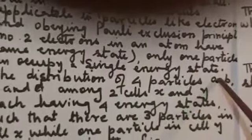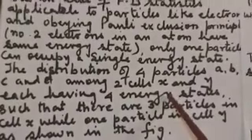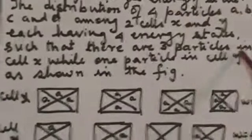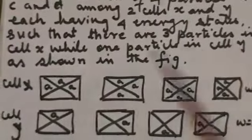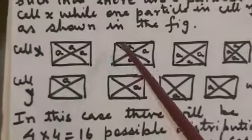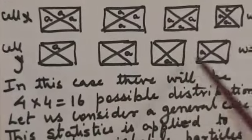Only one particle can occupy a single energy state. The distribution of four particles A, B, C and D among two cells X and Y, each having four energy states, such that there are three particles in cell X while one particle in cell Y. So there are four ways in which it can be arranged. And in cell Y is one, so these are four different distributions.